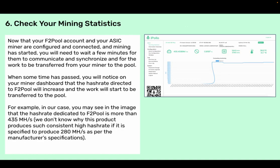Step six: check your mining statistics. Now that your F2Pool account and your ASIC miner are configured and connected and mining has started, you will need to wait a few minutes for them to communicate and synchronize and for the work to be transferred from your miner to the pool. When some time has passed, you will notice on your miner dashboard that the hash rate directed to F2Pool will increase and the work will start to be transferred to the pool.